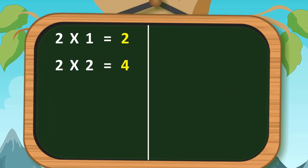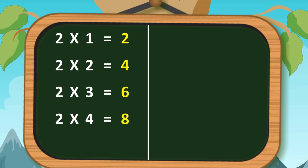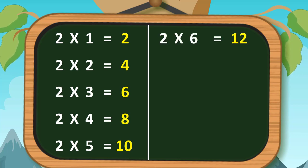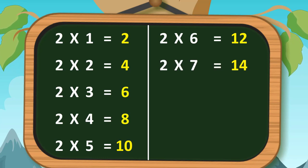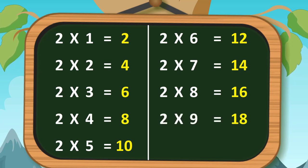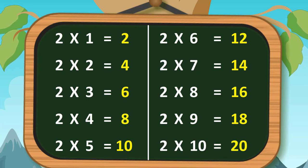Two twos are four, two threes are six, two fours are eight, two fives are ten, two sixes are twelve, two sevens are fourteen, two eights are sixteen, two nines are eighteen, two tens are twenty.